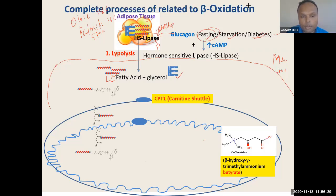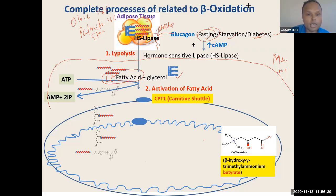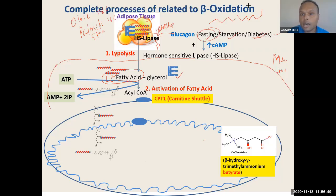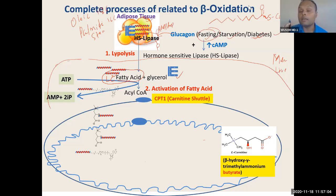Before it gets transported, this long-chain fatty acid — palmitic acid — has to be activated. Activation means the fatty acid converts into Coenzyme A. Wherever you see Coenzyme is attached, it has a very high energy bond formation. So all Coenzyme-containing molecules are high-energy, active molecules.